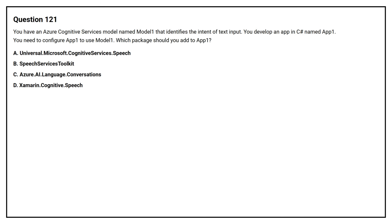Question number 121. You have an Azure Cognitive Services model named Model 1 that identifies the intent of text input. You develop an app in C-Sharp named App1. You need to configure App1 to use Model 1. Which package did you add to App1?